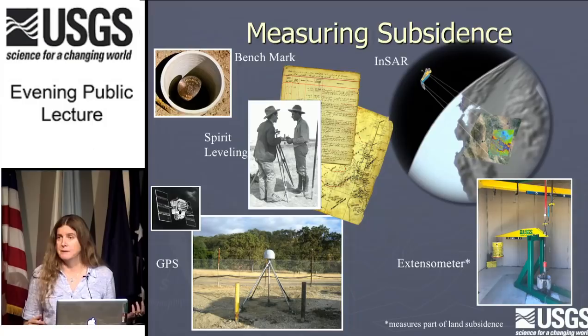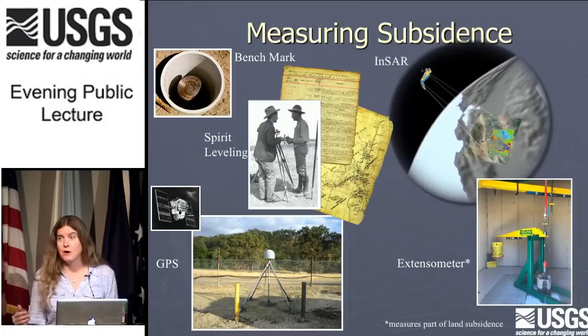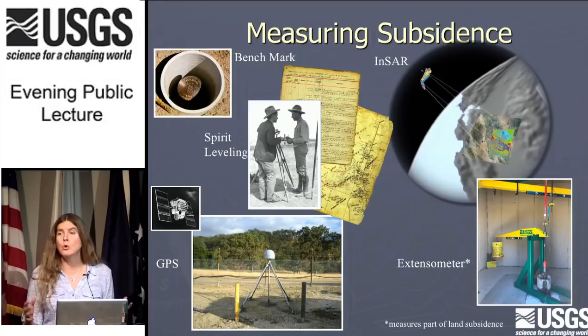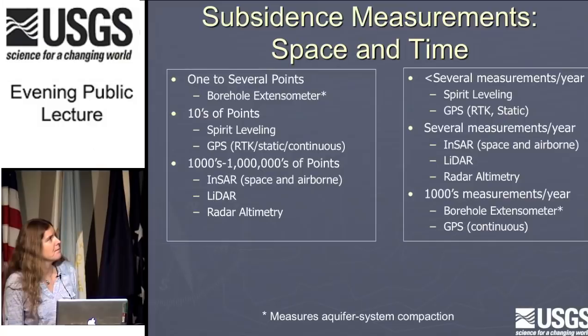An extensometer is different from GPS, spirit leveling, and InSAR — those all measure the change of the land surface. Extensometers actually measure the thinning or slight thickening of aquifer systems at a specific depth. This particular one is anchored at about 1,200 feet, measuring how aquifer system thickness changes in that interval. That's a very helpful measurement for water managers — if you know you have land subsidence, you need to know if the compaction is happening at 100 feet or 1,000 feet below land surface in order to manage it.